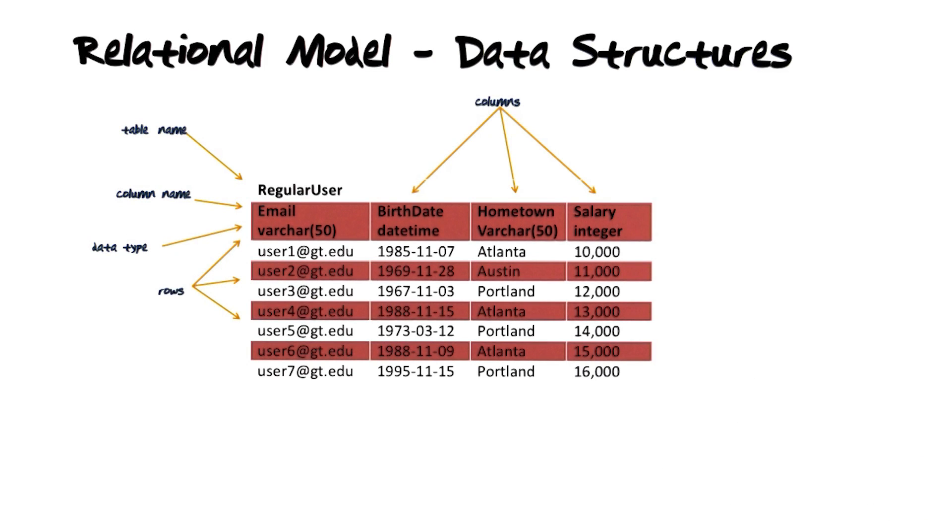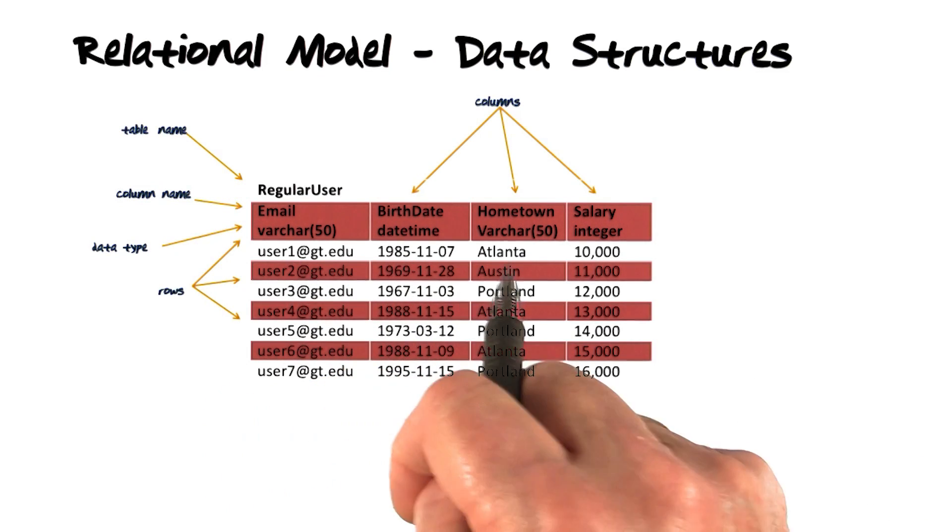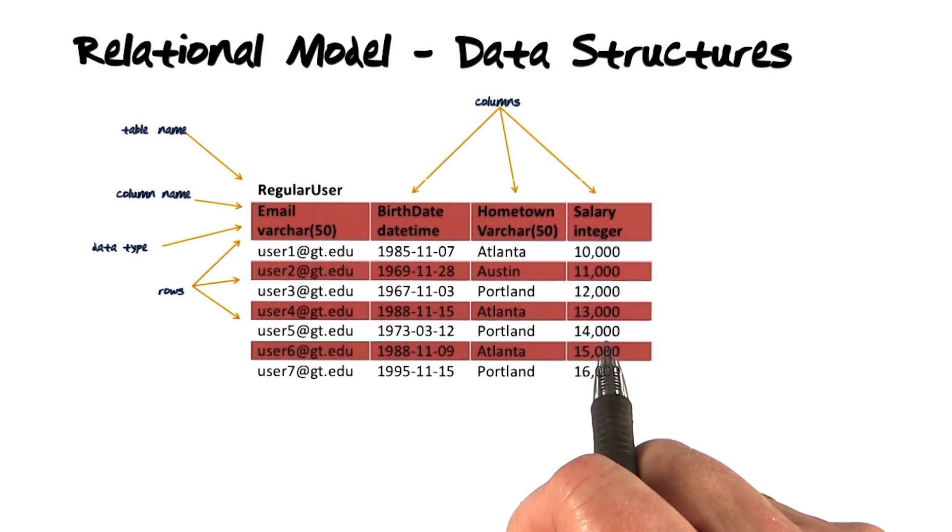A table is set to have columns. In this case, there are four columns. The number of columns is also called the degree of the table.